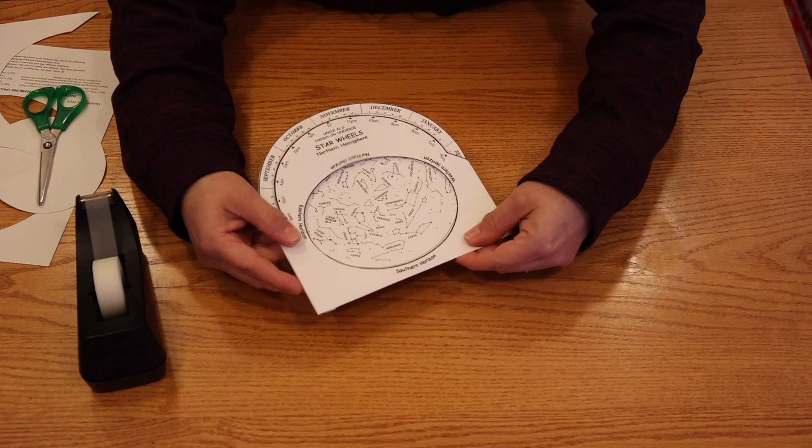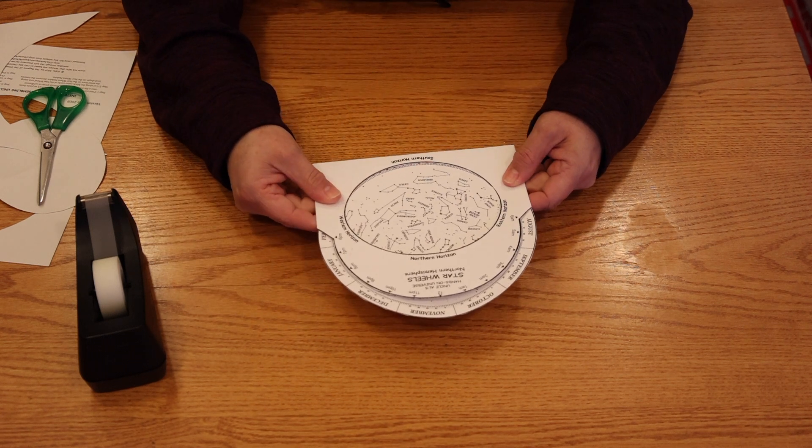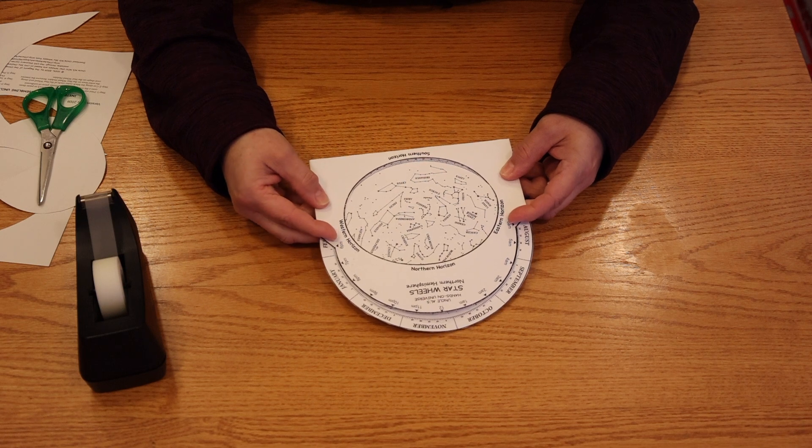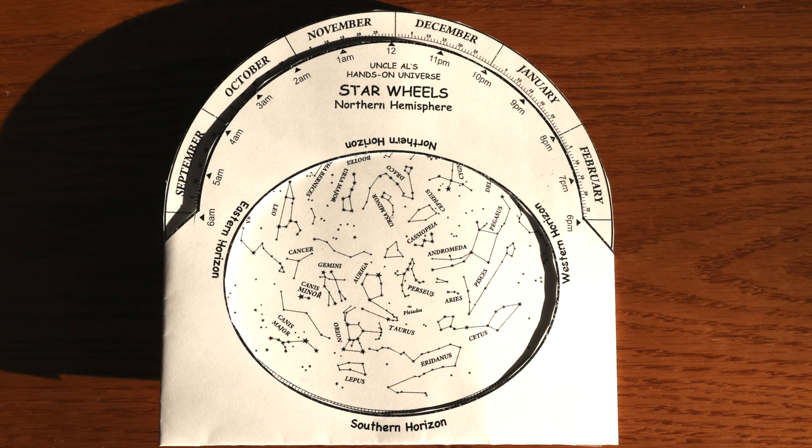Then if you're looking to the south, hold the planisphere so that the southern horizon is towards you and what you see in the oval is what you'll see in the sky. Let's go into a little more detail.